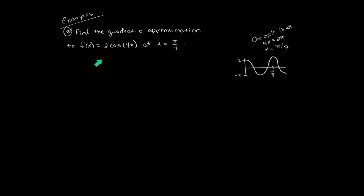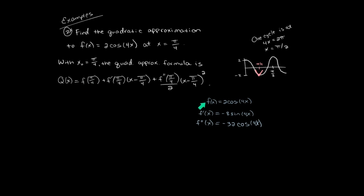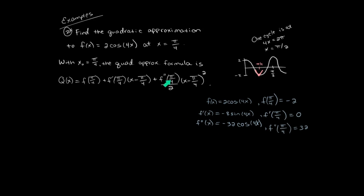Now let's do a quadratic approximation for 2 cosine of 4x. To find the period, we set 4x equal to 2π and get π over 2, so one cycle is at π over 2. We're finding the quadratic approximation at x equals π over 4. At that point, we're going to find a parabola that is pretty close to the cosine function. The quadratic approximation is a better fit than the tangent line. Our quadratic approximation formula is the first three terms of the Taylor series with x-naught equals π over 4, so we compute the first two derivatives and plug in x equals π over 4.